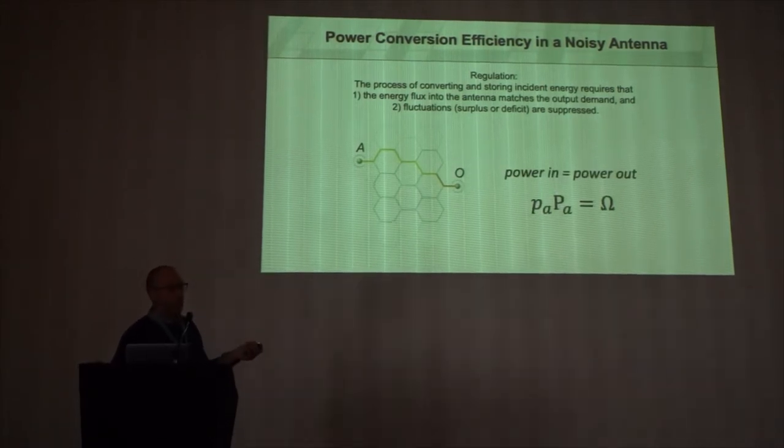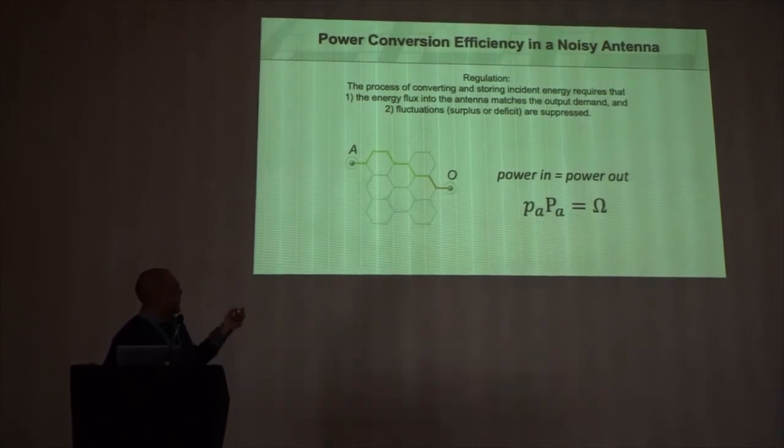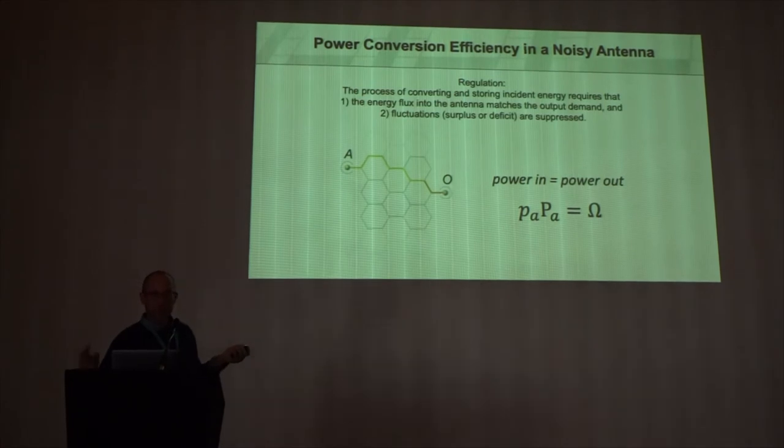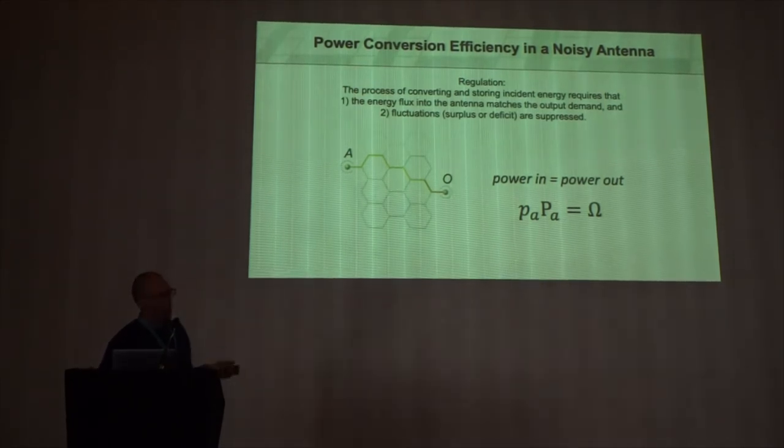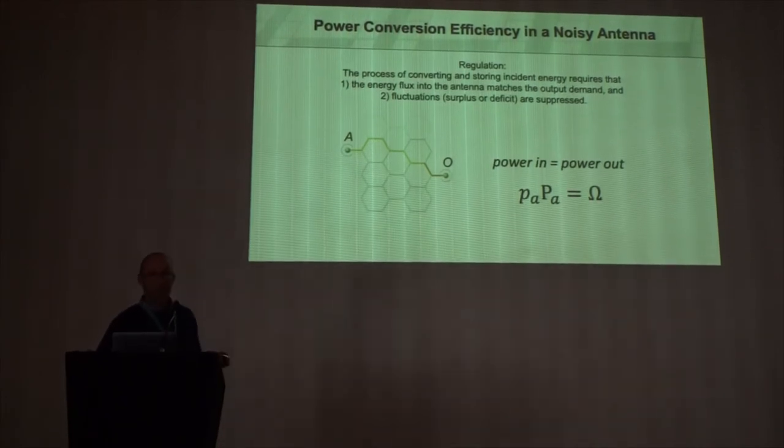But the basic idea is this. I randomly, with some probability A, bring in power in this chlorophyll A molecule. It comes in at some rate. So the power coming in at A. And I want it to be as close to my output as possible.